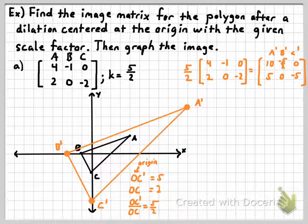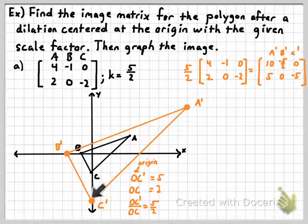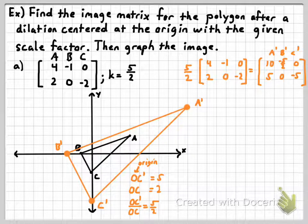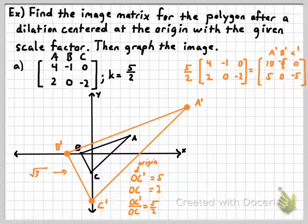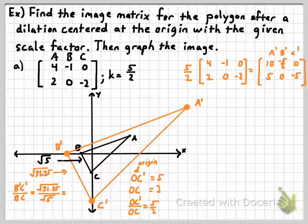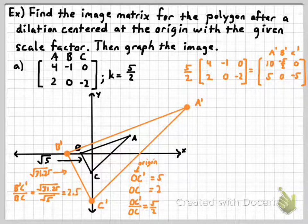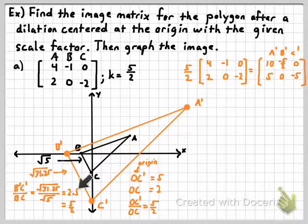Secondly, let's pick a pair of corresponding sides and find their distances. Comparing B'C' with BC using the distance formula: the distance from B' to C' is √31.25 and the distance from B to C is √5. Making a ratio of the image's side to the corresponding pre-image side gives 2.5, which is a 5-to-2 ratio. So the scale factor also gives you the ratio between the side lengths of the image compared with the corresponding side lengths of the pre-image.